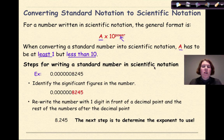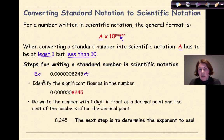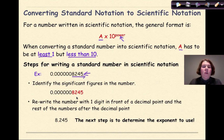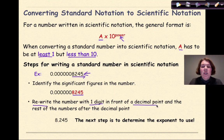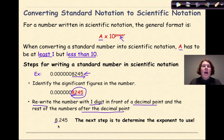Here are the steps for writing a standard number in scientific notation, using this example. First, identify the significant figures. We know there's a decimal point, so we start on the left-hand side — our Pacific side — and go across until we hit our first non-zero number. That number and everything afterwards will be significant. Next, rewrite the number with one digit in front of a decimal point and the rest of the numbers after the decimal. So we take that first significant digit, put it in the ones position, then a decimal, then the remaining numbers.